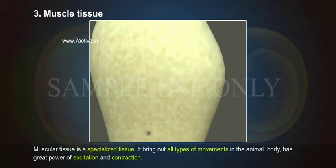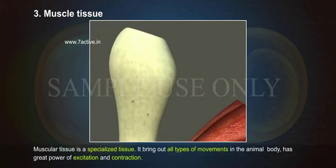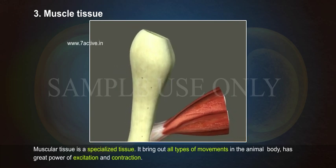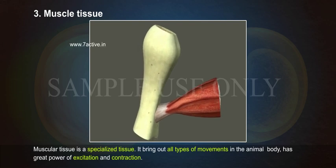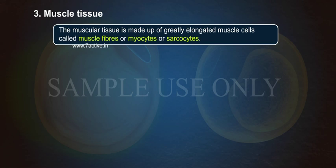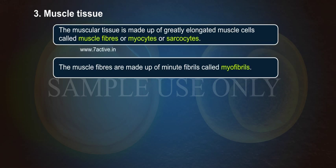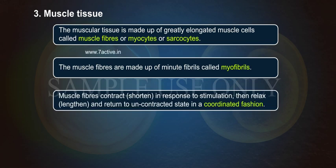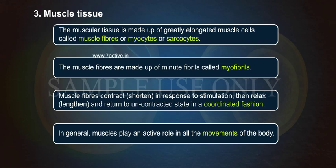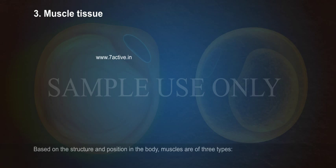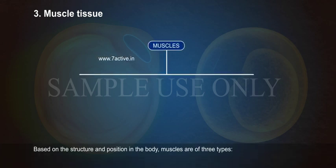Muscle Tissue: Muscular tissue is a specialized tissue. It brings out all types of movements in the animal body and has great power of excitation and contraction. The muscular tissue is made up of greatly elongated muscle cells called muscle fibers or myocytes or sarcocytes. The muscle fibers are made up of minute fibrils called myofibrils. Muscle fibers contract and shorten in response to stimulation, then relax, lengthen and return to an uncontracted state in a coordinated fashion. In general, muscles play an active role in all the movements of the body. Based on their structure and position in the body, muscles are of three types.